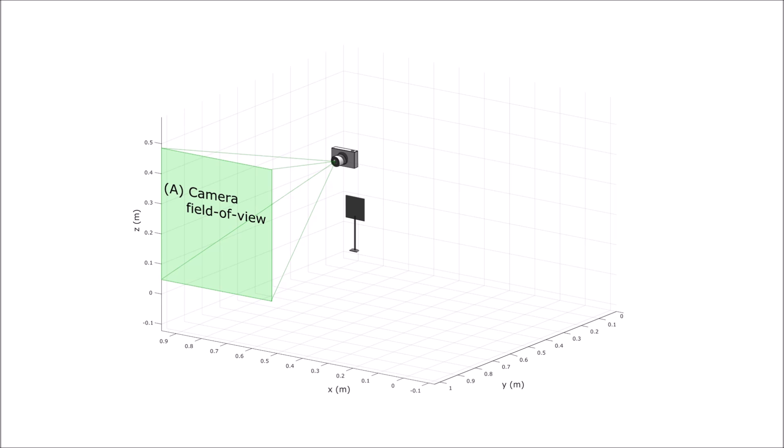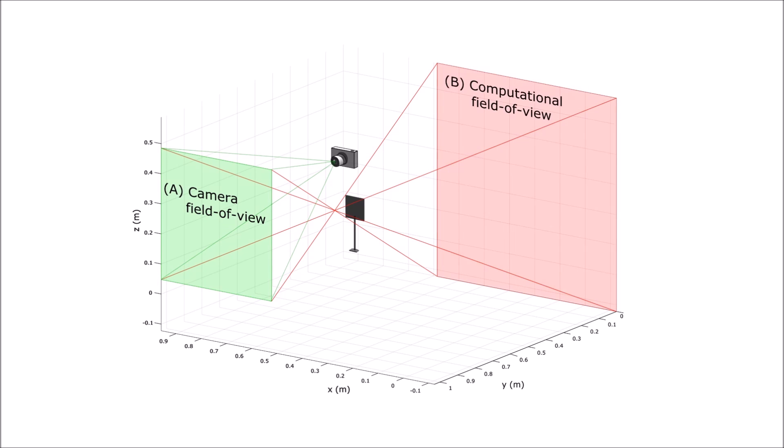The presence of an occluder establishes a computational field of view in the hidden scene. The computational field of view is the area in the hidden scene from which the camera field of view includes penumbra from at least one edge of the occluder, and thus benefits from improved conditioning.